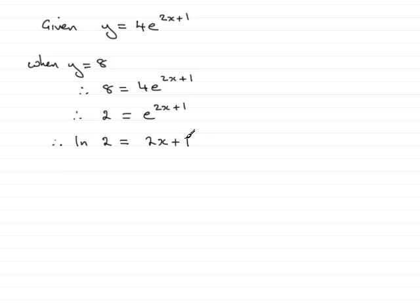Subtract 1 now from both sides so we therefore have the natural log of 2 minus 1 equals 2x. And then simply dividing both sides by 2 gives me that x equals the natural log of 2 minus 1 all divided by 2.